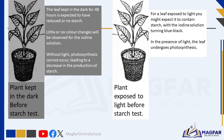The results of using a leaf kept in the dark for 48 hours compared to a leaf exposed to light will likely show differences. These differences reflect the impact of photosynthesis, a process that occurs in the presence of light. The leaf kept in the dark for 48 hours is expected to have reduced or no starch, and no color change will be observed for the iodine solution. Without light, photosynthesis cannot occur, leading to a decrease in starch production.